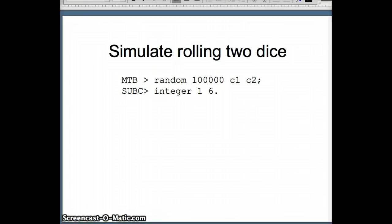Now we'll look at actually simulating the rolling of two dice. So what we're going to do here is we're going to take 100,000 numbers, put them in C1, C2, semicolon for a subcommand, integer 1 through 6. So that's going to put numbers like 1, 2, 3, 4, 5, or 6 into columns 1 and 2.